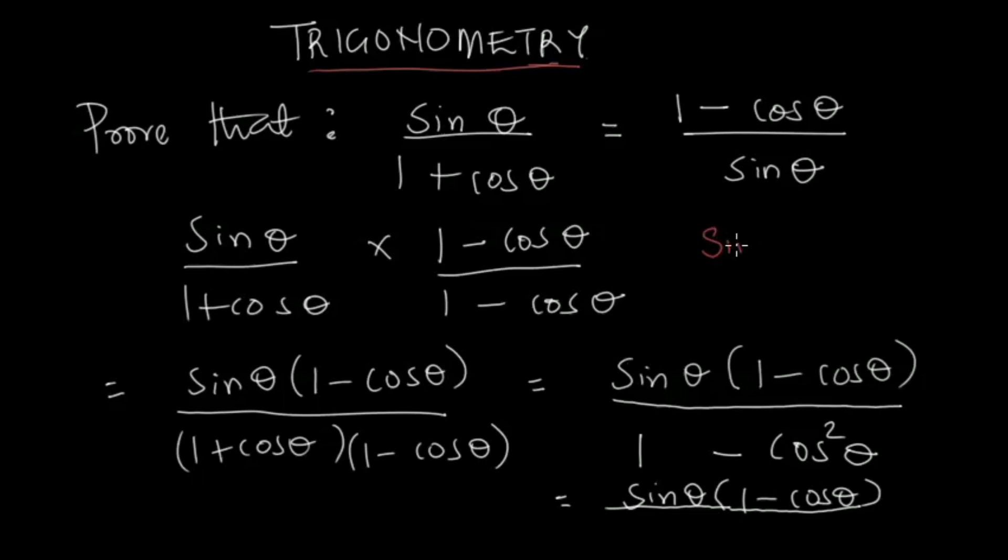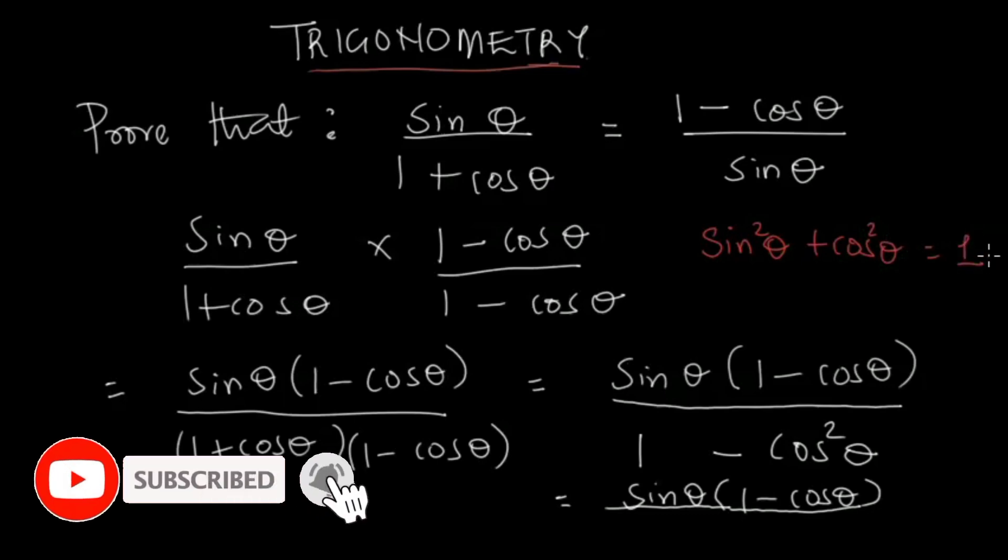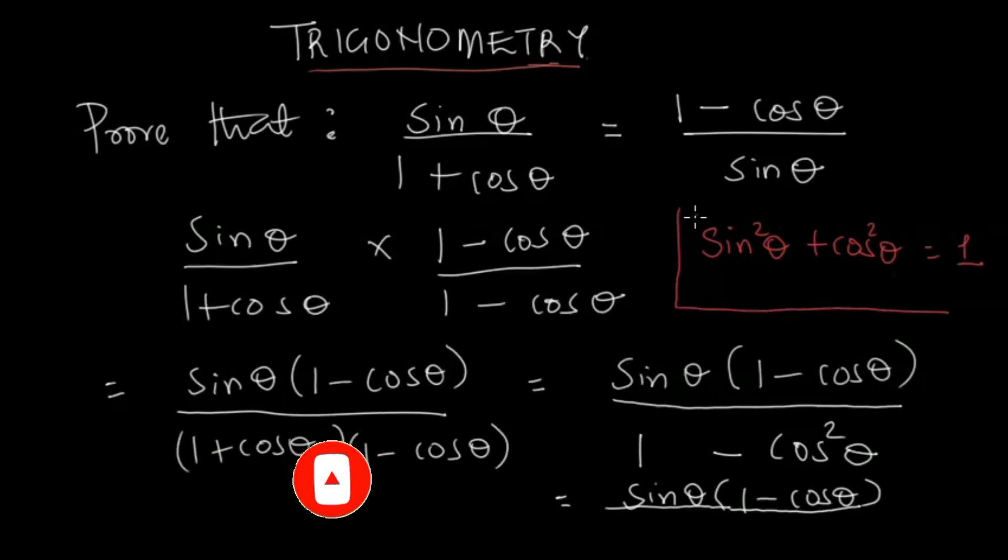Sin² θ plus cos² θ equals 1. So this means that if you take cos² θ to the other side, 1 minus cos² θ equals sin² θ.